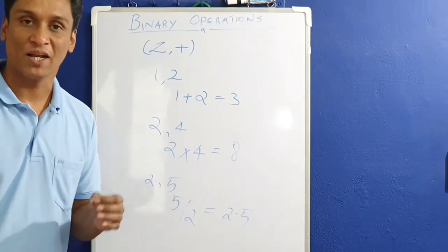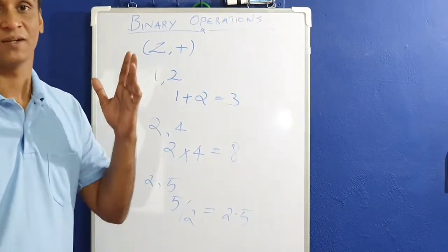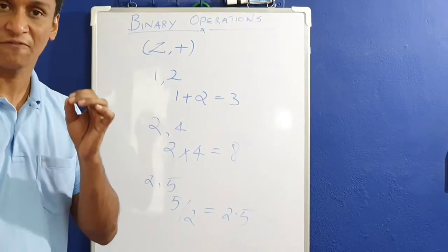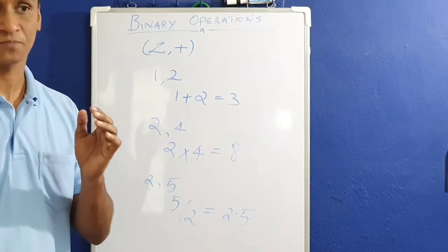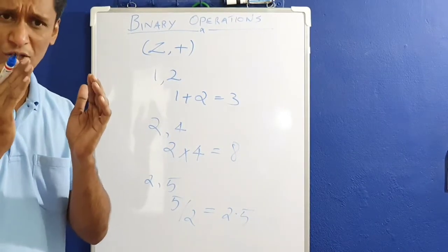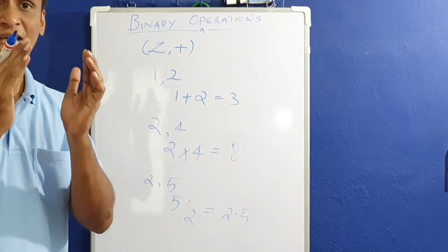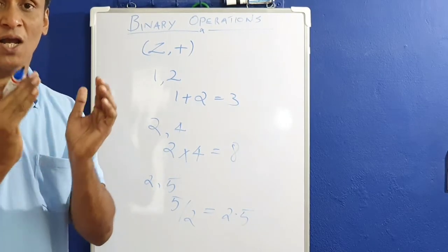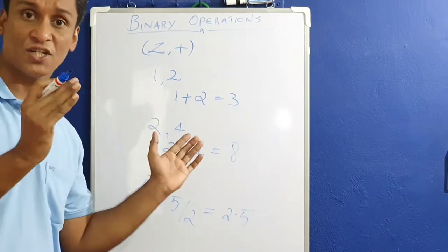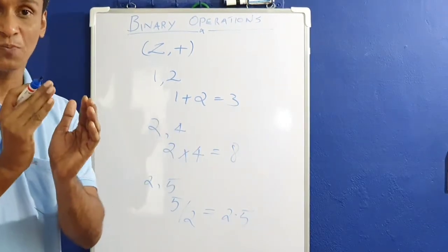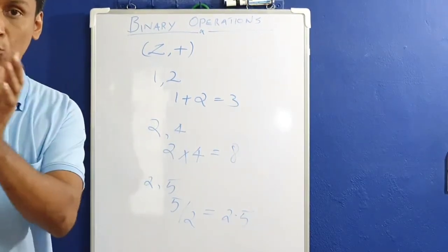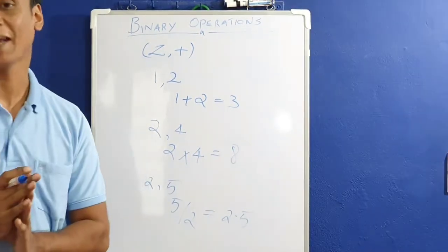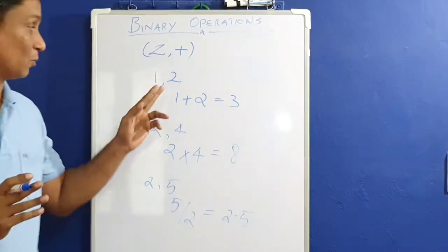What is a binary operation? It is a function. One set of integers is operated upon, and the output is only one set of integers.